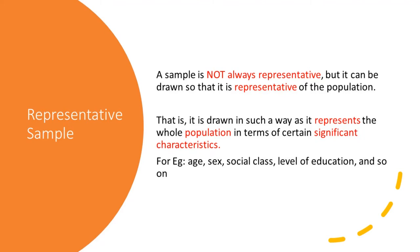Let us now look at another important concept in sampling: representative sample. If you just take any group of people from the population, that is any sample, it need not always represent the whole population. But there are ways in which we can draw a sample so that it represents the population we are interested in — that is, we can draw it in such a way as to represent the whole population in terms of certain significant characteristics. For instance, in terms of sex, age, social class, or level of education.